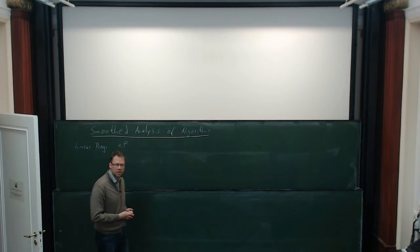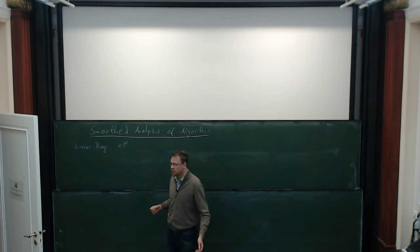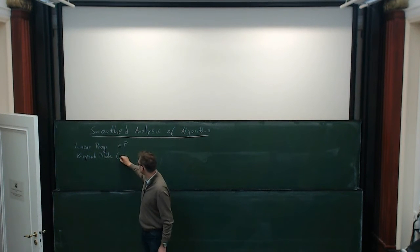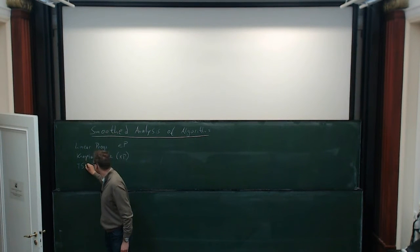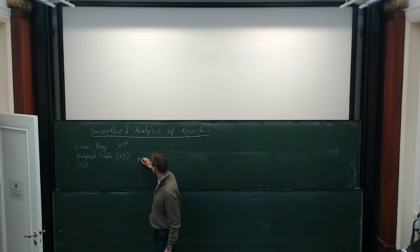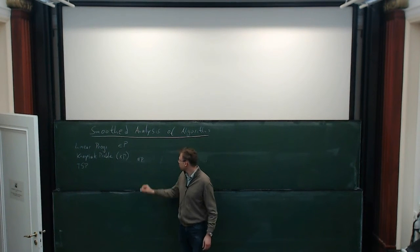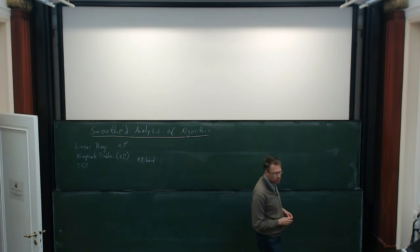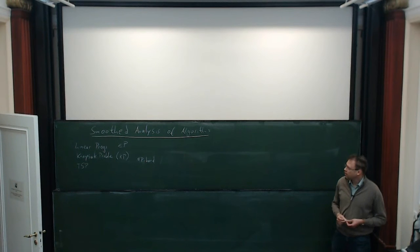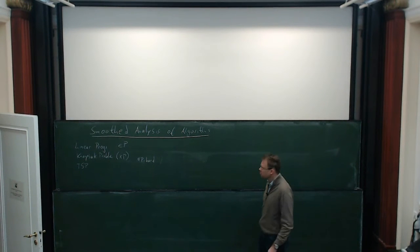On the other end of the spectrum, you have NP-hard problems. You have classical problems like the knapsack problem, which I will always abbreviate in this talk by KP. We all know that these problems are NP-hard. The TSP is even NP-hard in the strong sense, so we cannot hope for algorithms that solve these problems efficiently in polynomial time.